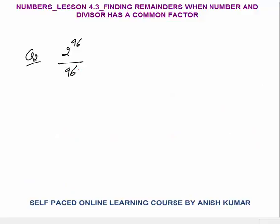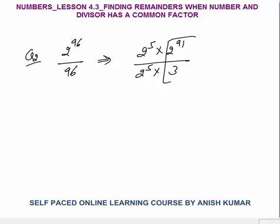Next question, question number 2 — please try to solve with me. 2 power 96 by 96. You should first try to solve yourself, then look at how I solve it. Now what common factor can I take? I can write 2 power 5 into 2 power 91, and 96 is 2 power 5 — which is 32 — into 3. So 2 power 5 is the common factor; keep this aside and find the remainder when 2 power 91 is divided by 3.